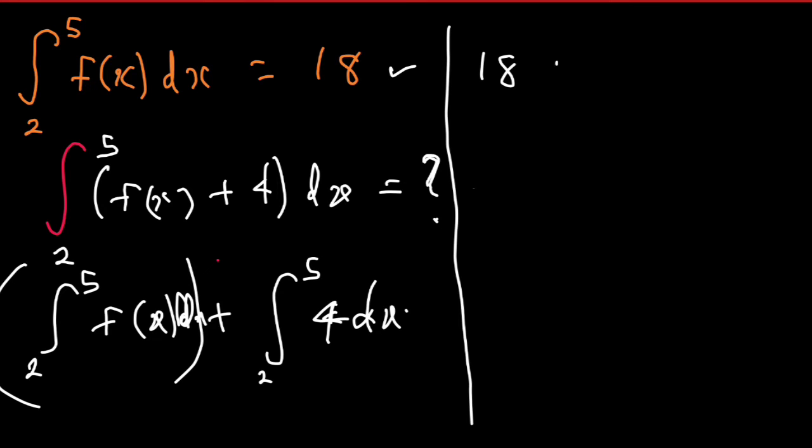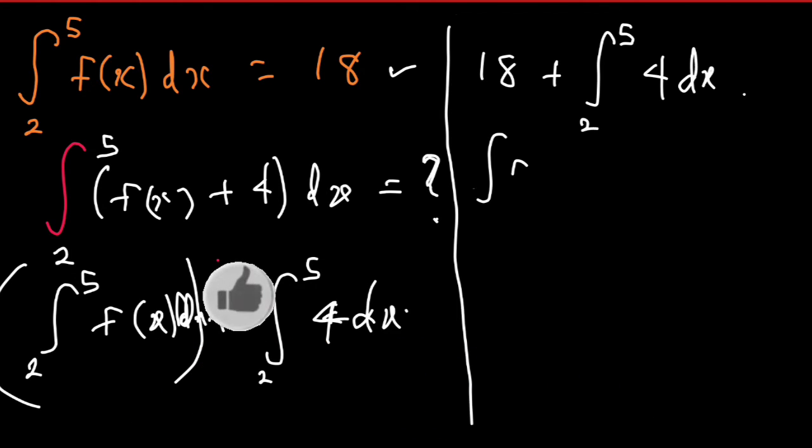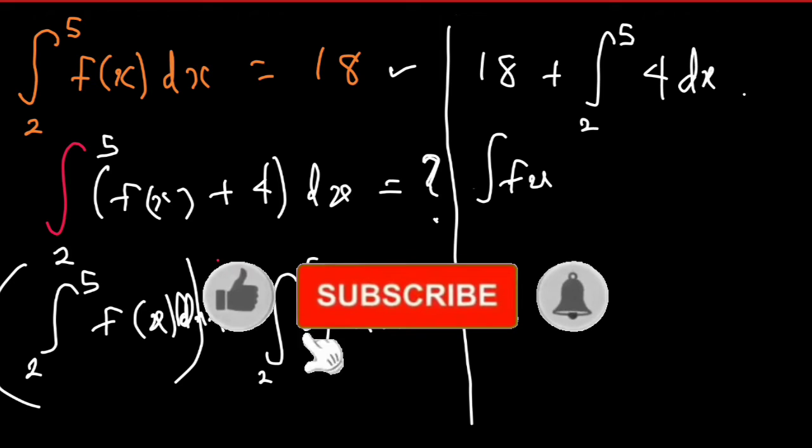The integral of 2 to 5 of 4 dx. Now the formula for integration of any function f(x) is always equals to ax^(n+1) all over n+1.